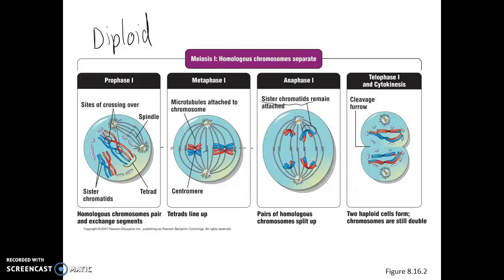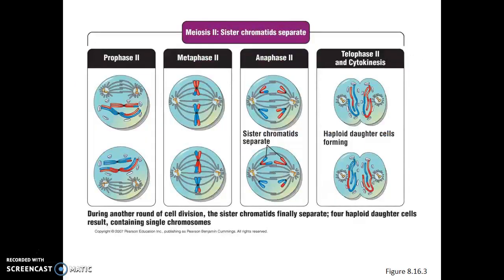In telophase 1, the chromosomes decondense and nuclear envelopes may or may not reform. Notice how we started with a cell that had four chromosomes, and we've ended with cells that now only have two chromosomes each. These cells are haploid at the end of meiosis 1. These haploid cells then go through another round of division — meiosis 2 — and what we'll see is that meiosis 2 is very similar to mitosis.